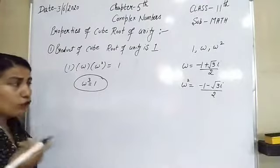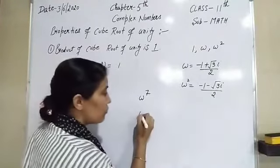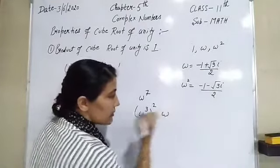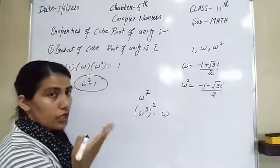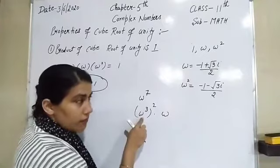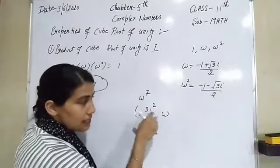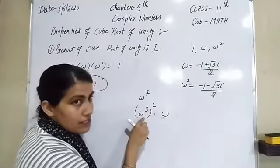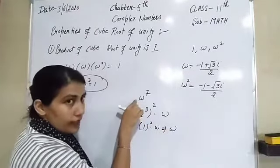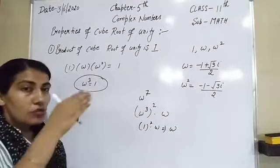For example, to find ω⁷: we know ω³ = 1. Write ω⁷ = (ω³)² × ω, since 3×2 = 6 and 6+1 = 7. The value of ω³ is 1, so 1² × ω = ω. Therefore ω⁷ = ω. In a similar way you can find different powers of omega such as ω¹⁵, ω¹⁷, ω²⁰, and so on.